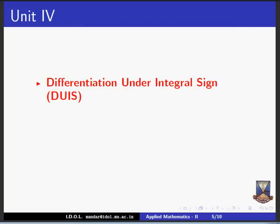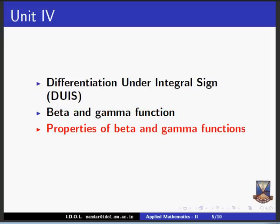In the fourth unit, we have topics like DUIS — differentiation under integral sign. We have beta and gamma functions, two types of improper integrals, properties of beta and gamma functions, relationship between beta and gamma functions, and error functions.